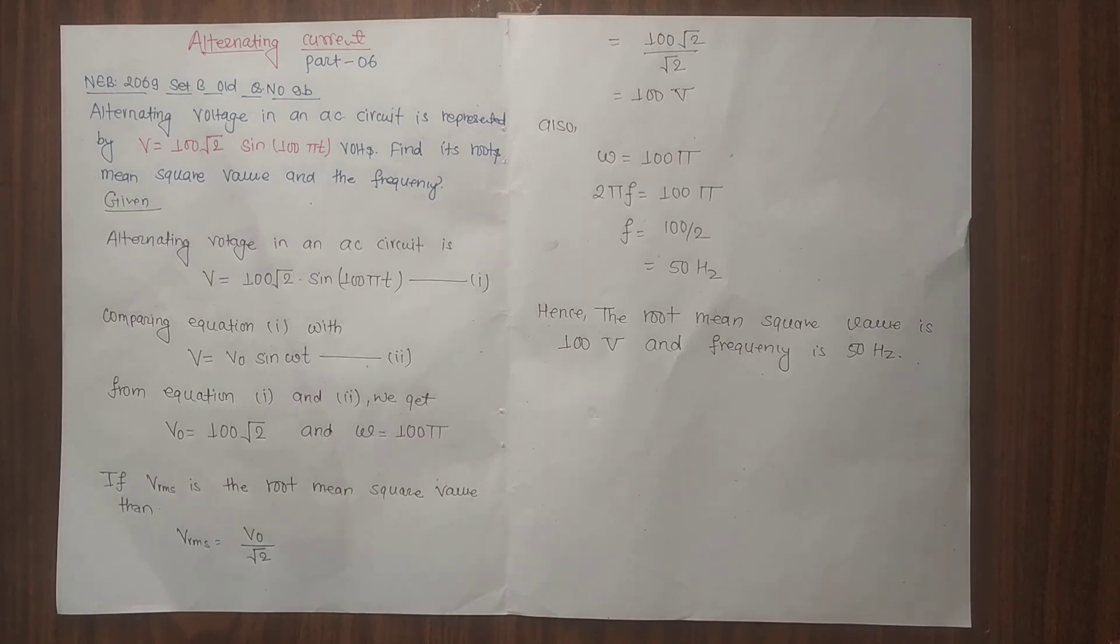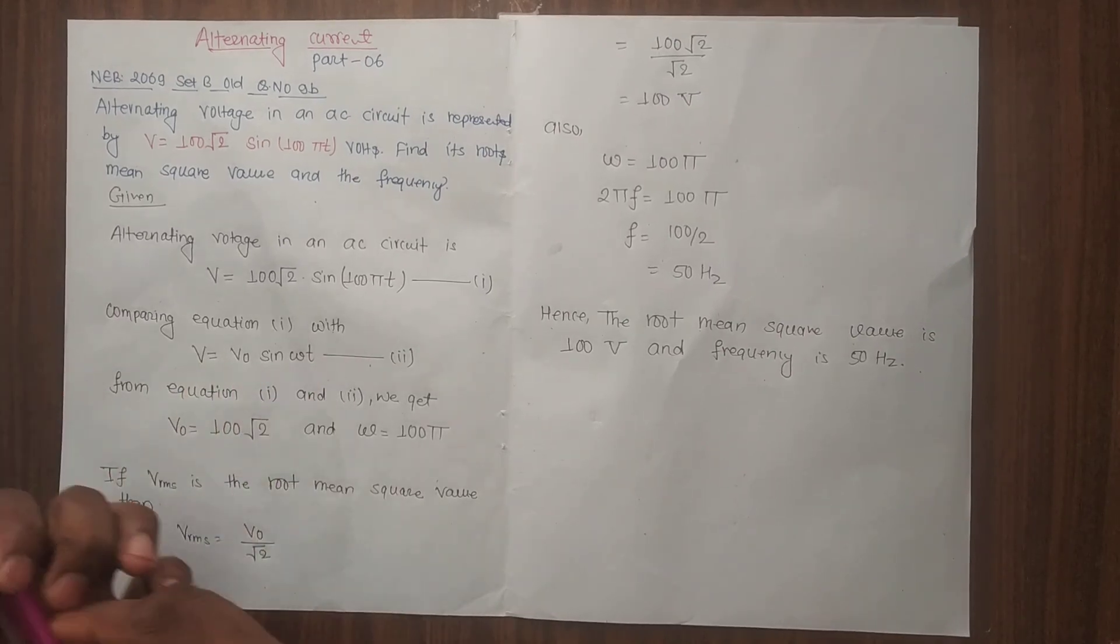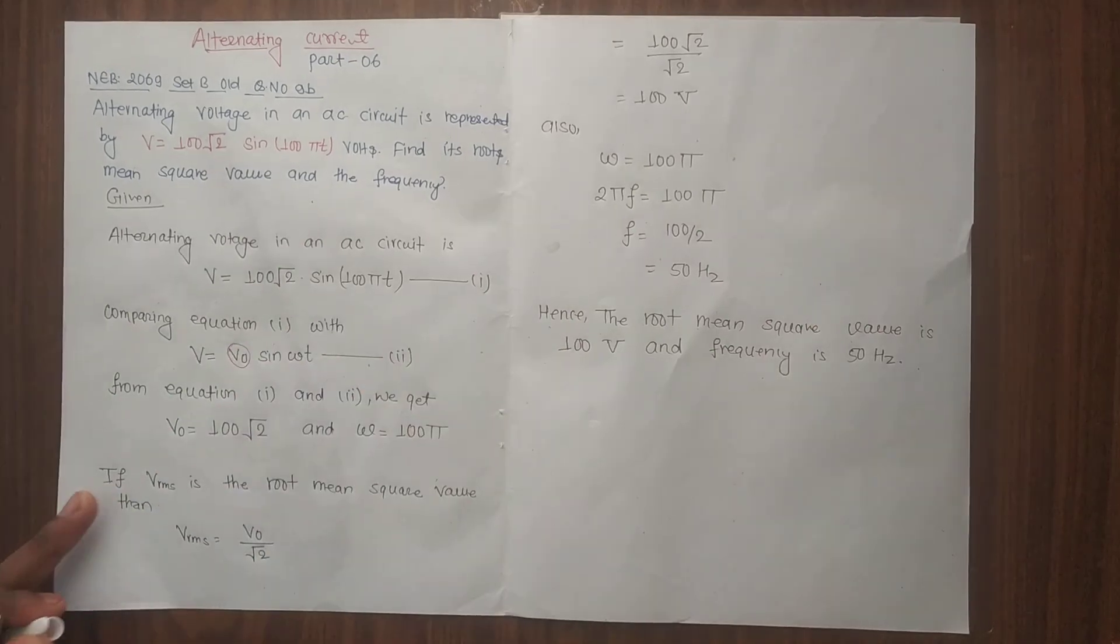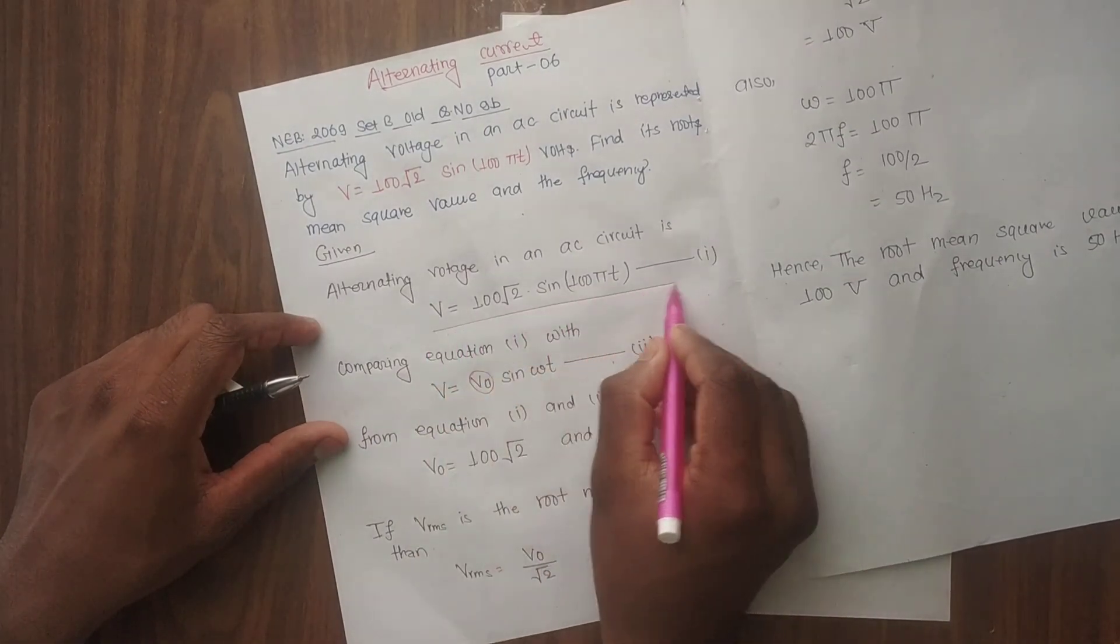We need to compare the given equation. How do we compare the equation? The value of voltage in alternating current is given by V = V0 sin(ωt), where V0 is the peak value. We compare the equations.